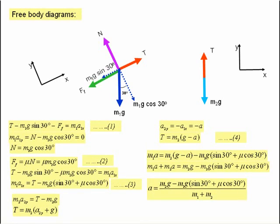Transposing the equation, we finally end up with the equation for a as being equal to M2g minus M1g times sin 30 plus mu cos 30, divided by M1 plus M2.